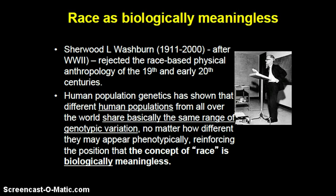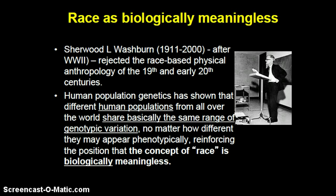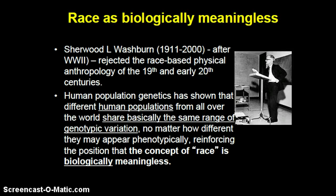As you've seen from the course materials, the films, and the American Ethnological Association's website on race, race is a social construct. However, as Washburn pointed out early on, it's biologically meaningless. He rejected the race-based physical anthropology of the 19th and 20th centuries, noting that human population genetics has shown that different human populations from all over the world share basically the same range of genotypic variation, no matter how different they may appear phenotypically, thus reinforcing the position that the concept of race is biologically meaningless.